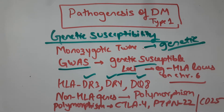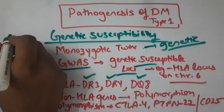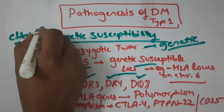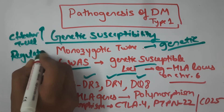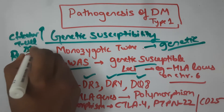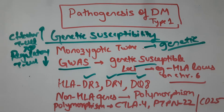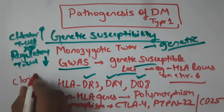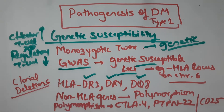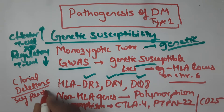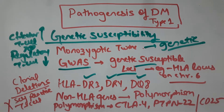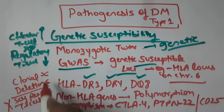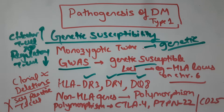Type 1 diabetes is an autoimmune disease where our own effector T cells destroy our own beta cells. This could be because our effector T cells are overactive, or the regulatory T cells — which should inhibit the effector T cells — are not functioning properly. Another possibility is that clonal deletion of self-reactive T cells has not occurred, and these cells have persisted and caused damage to the beta cells.